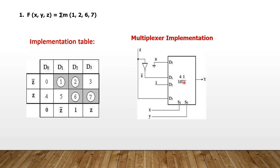Now we implement using the 4 to 1 multiplexer with inputs d0, d1, d2, d3, two selection lines S1 and S0, and the remaining variables X and Y connected to the selection lines, since Z was used for the implementation table. From the table: d0 = 0, so it is grounded. d1 = Z bar, connected to Z bar. d2 = 1, connected to logic 1 or +5V — both are the same. d3 = Z, connected to Z. There is finally one output.